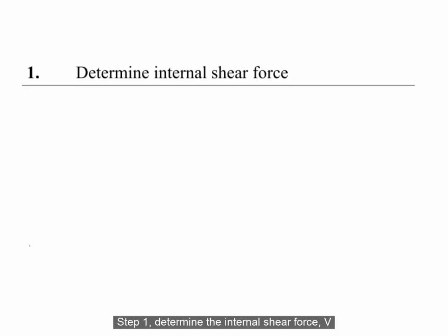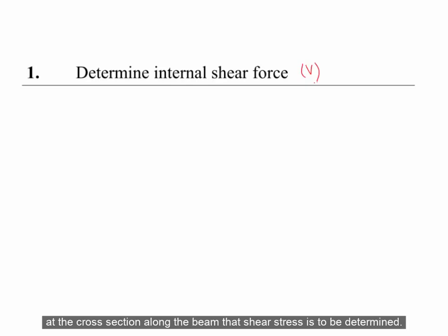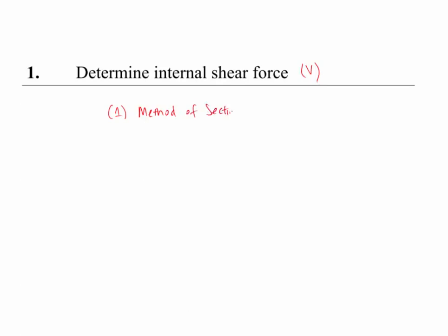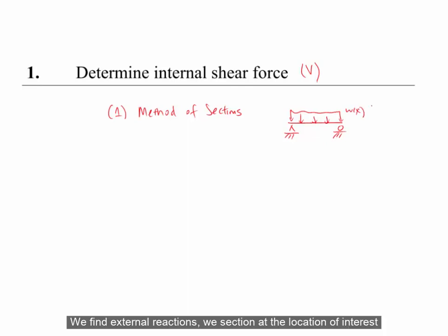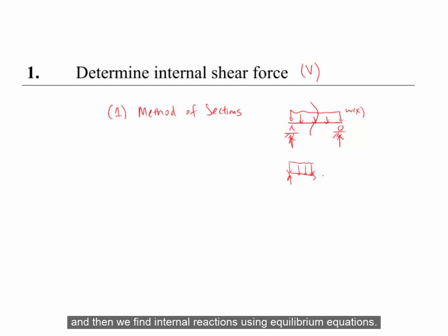Step 1: Determine the internal shear force V at the cross section along the beam where shear stress is to be determined. We can do this by two ways. First, the method of sections — we have our beam and the transverse load, we find external reactions, we section at the location of interest, and then we find internal reactions using equilibrium equations.